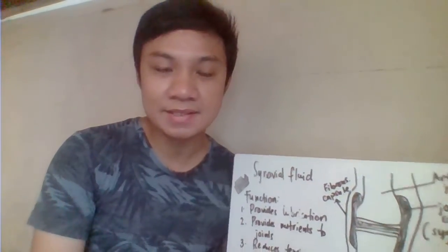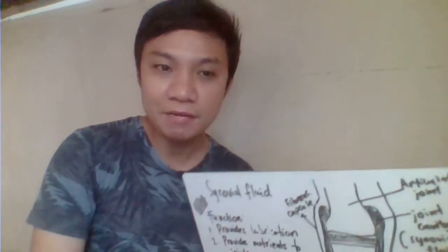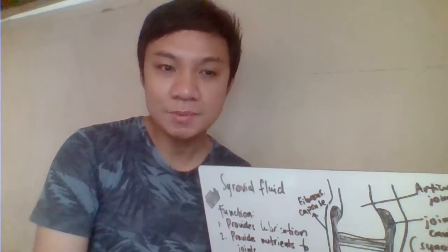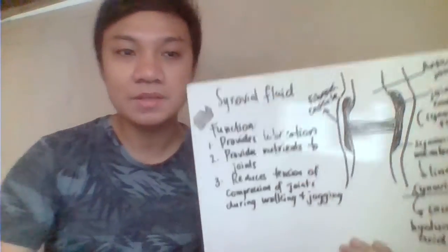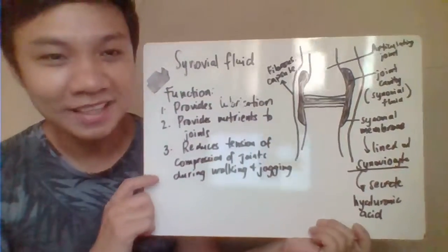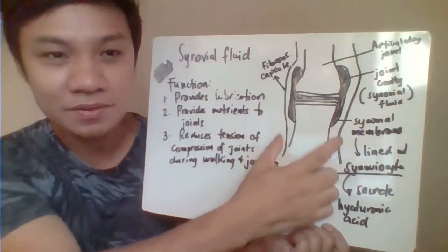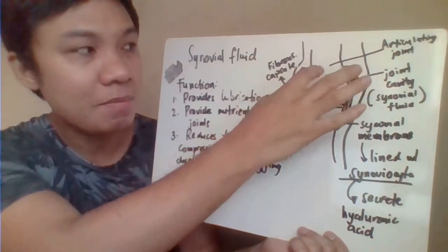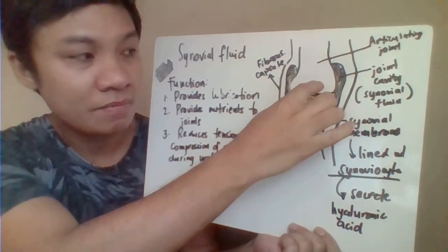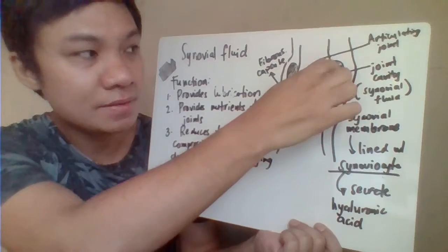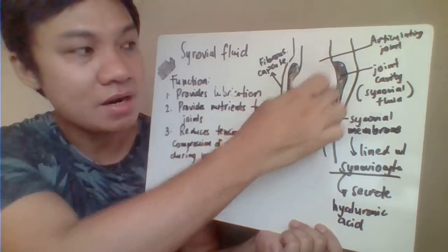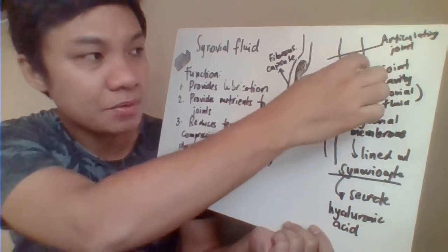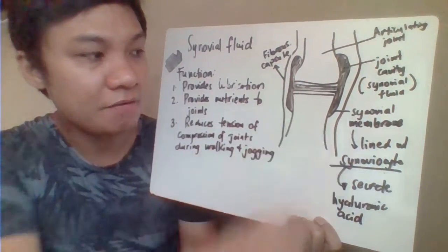Today we're going to discuss another body fluid — the synovial fluid. We have here an illustration of your bones and your joints. Basically the synovial fluid is located within the joint, and we have here the space — the joint cavity. We also have here the fibrous capsule and the synovial membrane.